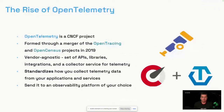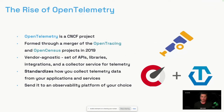OpenTelemetry is an open standard as part of the CNCF Foundation. It was formed through a merger of OpenTracing — focusing on traces — and OpenCensus — focusing on metrics. It standardizes the collection of all telemetry, like traces, metrics, and logs, in a very vendor-agnostic way. It also comes with controls to manage that telemetry and send it to an observability backend of your choice, for example New Relic.